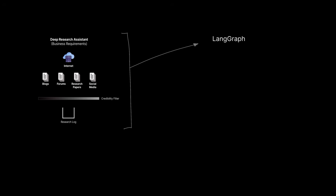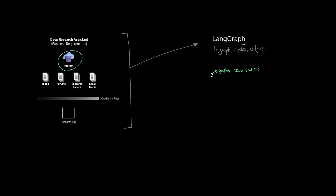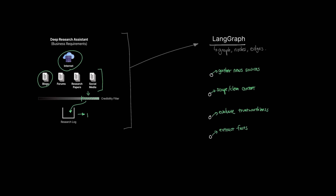Now with LangGraph, the steps look more streamlined. The entire process can be run using a graph where each node is responsible for a specific task and each edge determines the flow of execution. In our case, we need to create nodes for: searching and gathering sources, scraping and cleaning content, evaluating trustworthiness using an LLM, extracting factual statements from the sources, and generating a report.